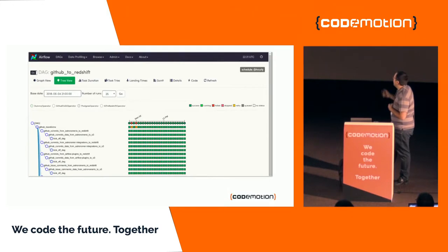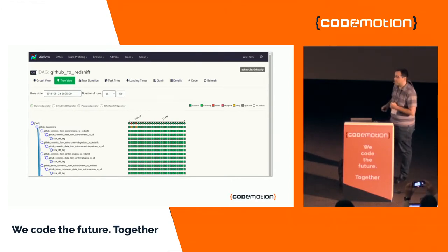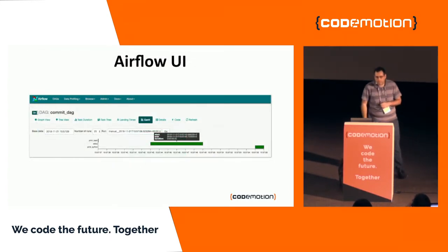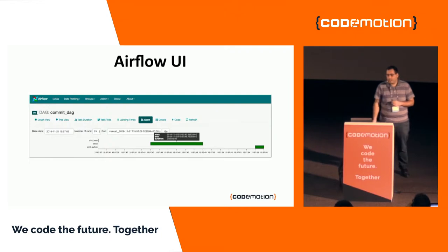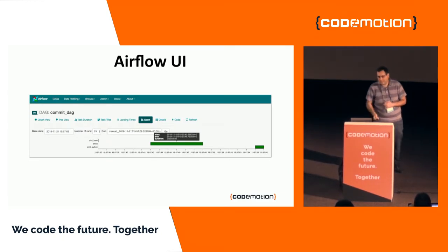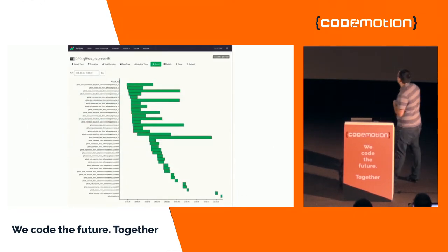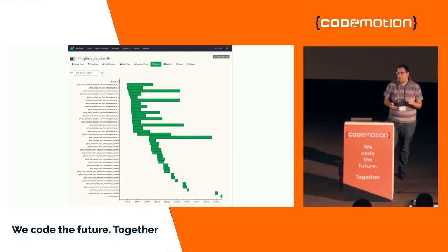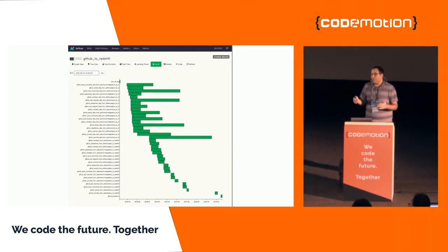We also have a really useful Gantt view so we know how long each task has been running. In this case, our sleep task took six seconds — some overhead there. But it's very handy for longer tasks with many dependencies. We can see which processes are overlapping or taking more time over time, watching how our DAGs grow.